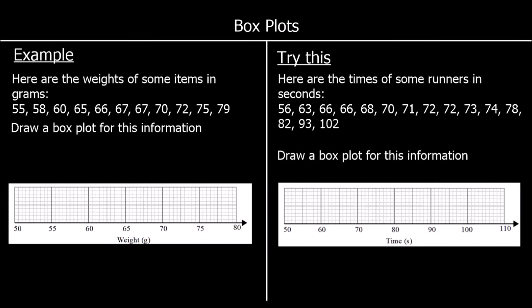Here we have another example. This time we've got the weights of some items in grams and we need to draw a box plot. We need to know what information goes onto a box plot, so we need the lowest value, which is going to be 55. So we can draw a line at 55. The highest value is 79, so that gets a line too.